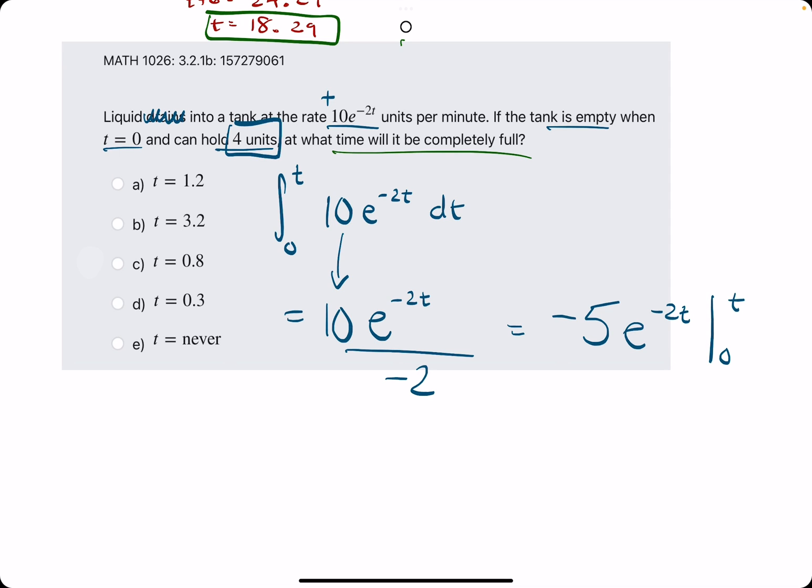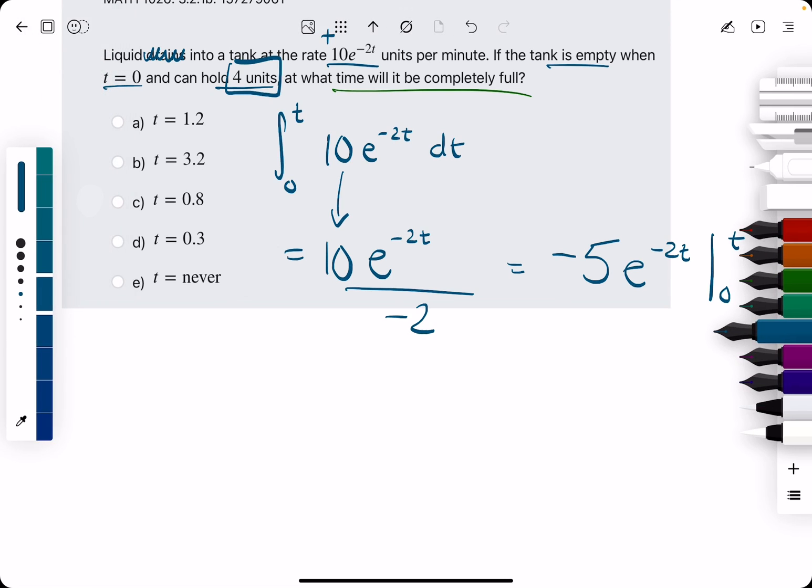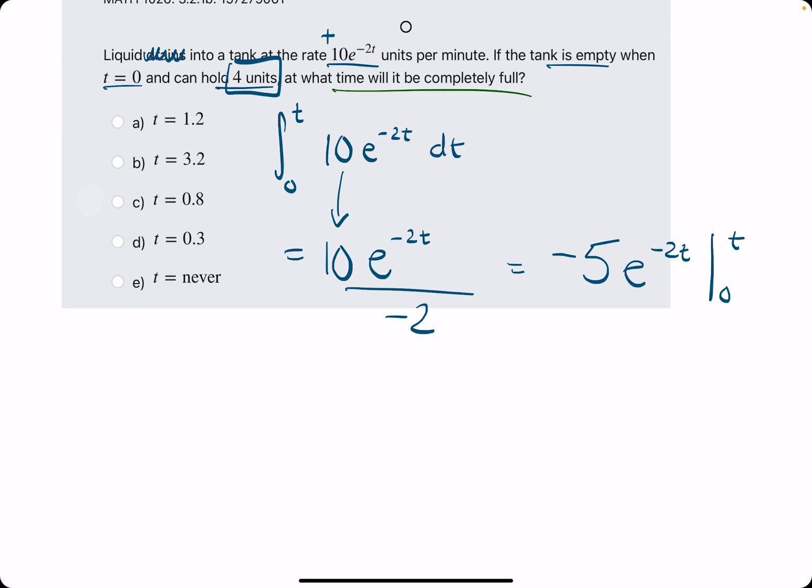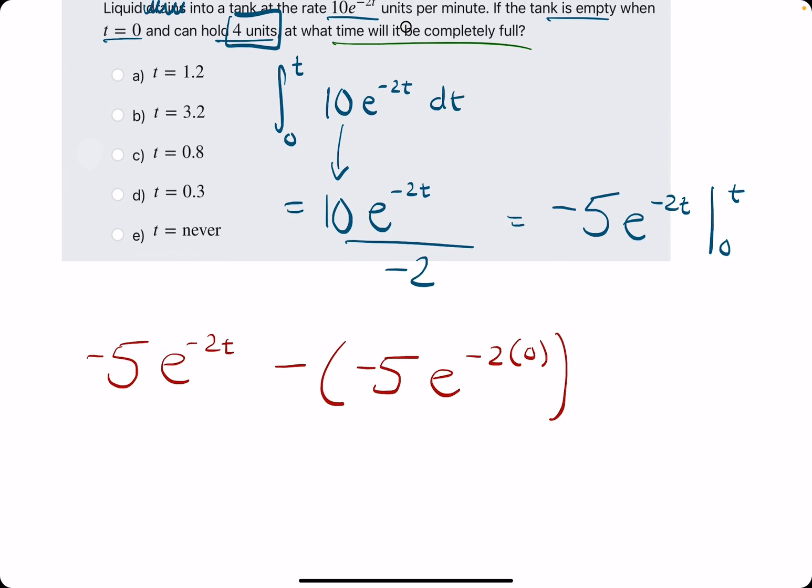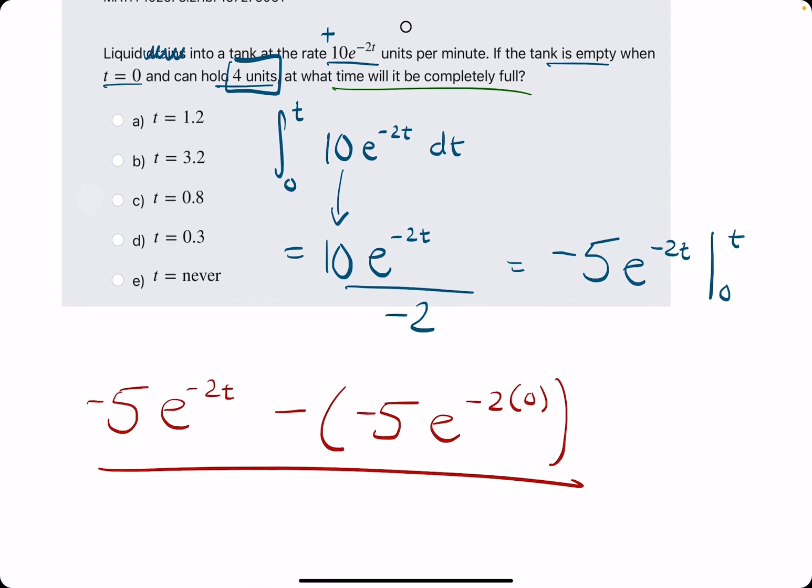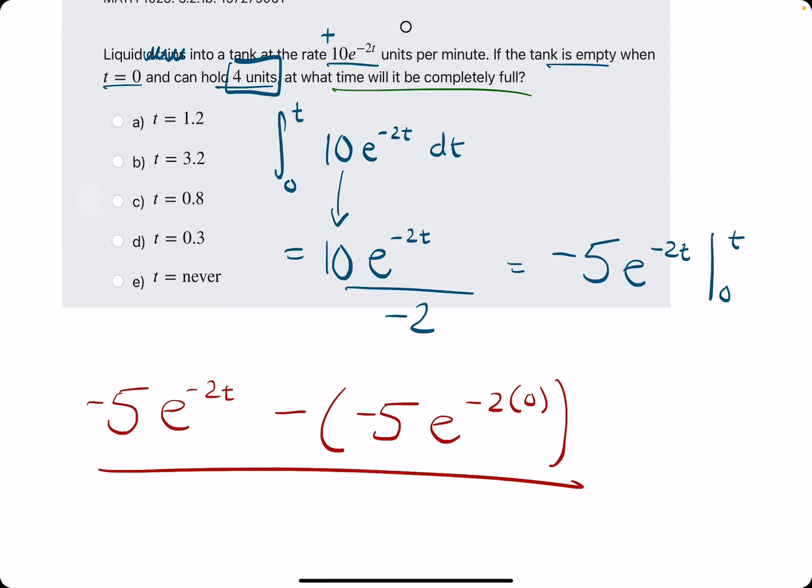We are evaluating this from zero to t, meaning we plug t in first, so really just the same expression, negative 5 e to the negative 2t. Then we are subtracting what we get when we plug in zero.